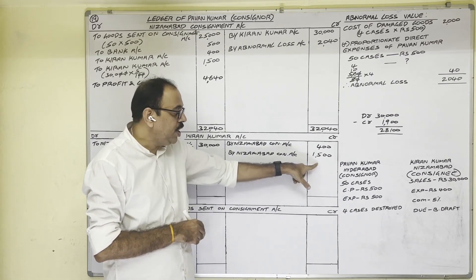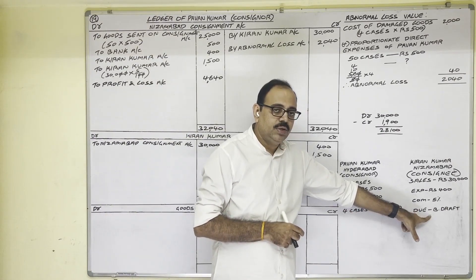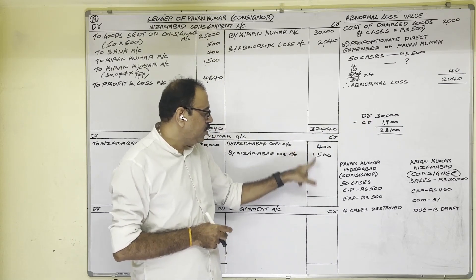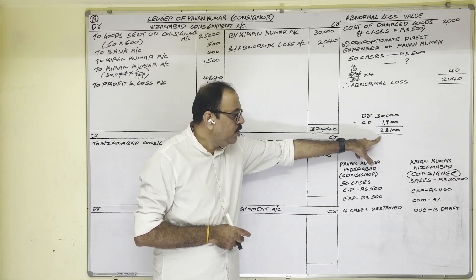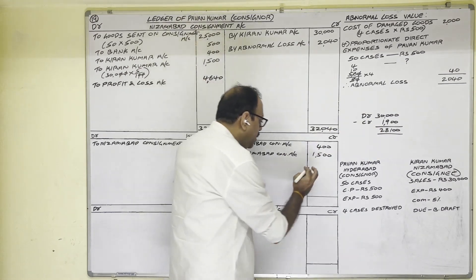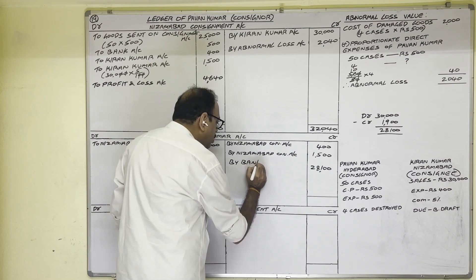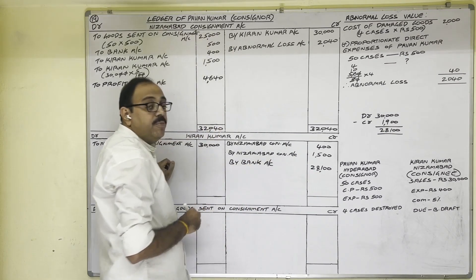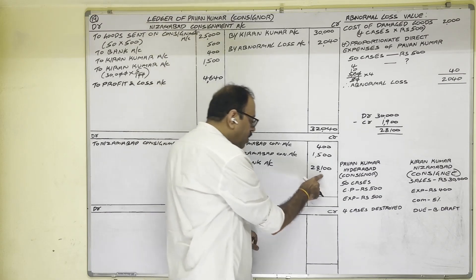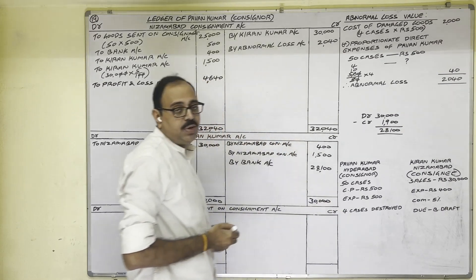The remaining amount after deductions is called the due amount, which the consignee pays through a bank draft. Debit total is 30,000 minus credit total of 1,900, so the due amount is 28,100 rupees. Since credit total is less, we write on the credit side: By Bank Account for 28,100 rupees. Both side totals become 30,000 rupees. So Kiran Kumar's Account is completed.